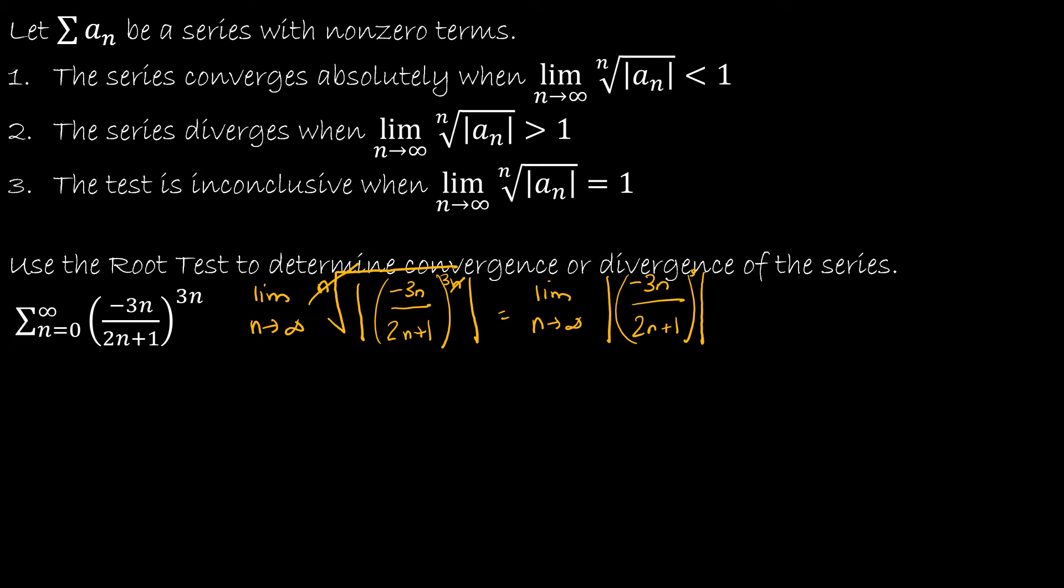Now this is an absolute value, so just as we talked about in previous lessons, we're going to think about what happens with the absolute value. So I still have the limit as n approaches infinity, but this value in the numerator, the negative, is going to go away because the absolute value will make it go away. So even though it's going to be negative 3 to the third, which would be negative 27, I'm going to keep it as positive because the absolute value would make it positive. So I'm going to write this as 3n.